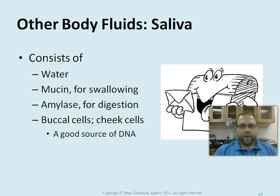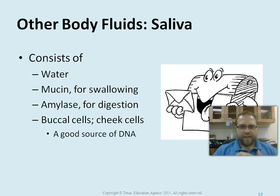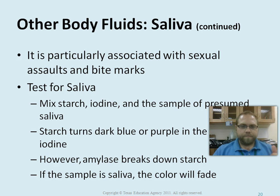For body fluids — saliva consists of water, mucin (which helps you swallow), amylase (an enzyme used in digestion that starts to break down food), and buccal cells, which are your cheek cells. This is great for forensics because you can generally pull DNA from saliva due to those cells. You'll find saliva especially when dealing with sexual assaults or bite marks. To test for it, you take a mixture of starch, iodine, and the saliva — the starch turns blue when you add iodine, but the amylase will break down the starch, and if the color starts to fade, that confirms it's saliva.